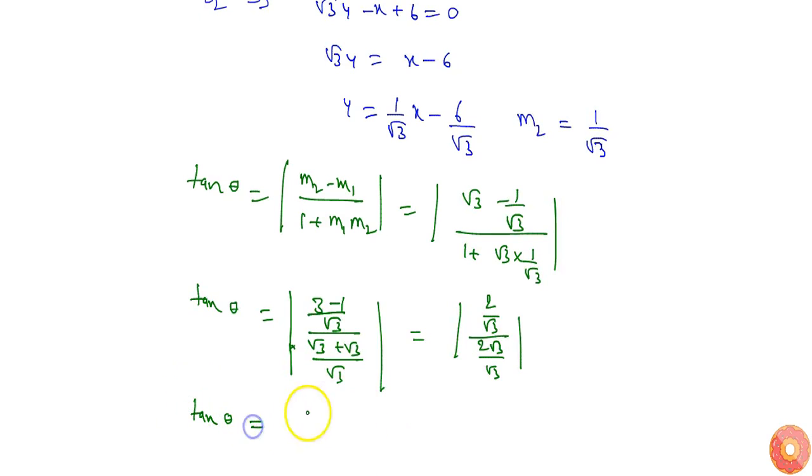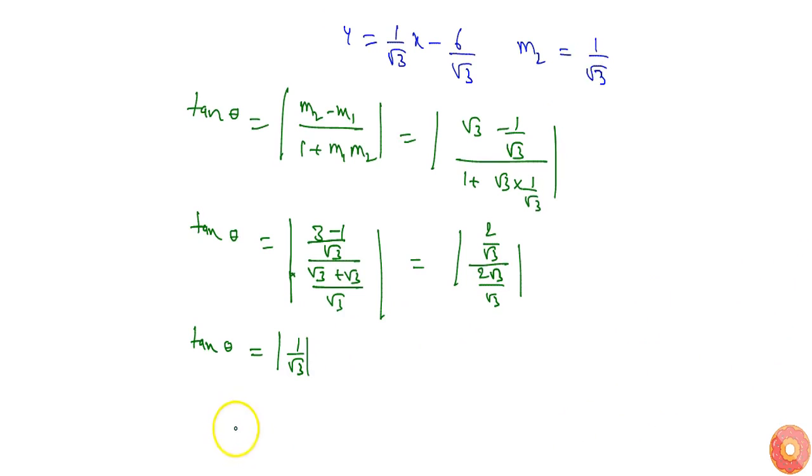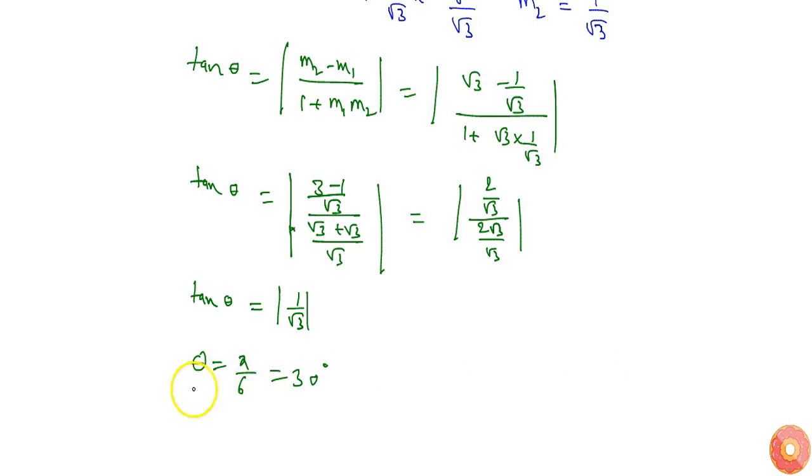1 by root 3. So theta will be pi by 6, which is 30 degrees. This is an acute angle.